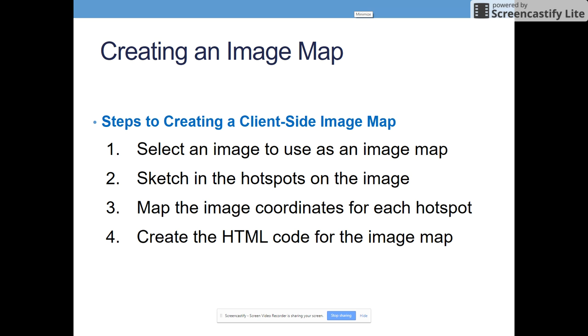So there are four main steps to creating an image map. First, you're going to select an image to use as your image map. Second, you'll sketch in the hotspots on that image map. Third, you'll map the image coordinates for each hotspot. And then notice it's not until step four until we actually create that code. So you have to go through these first three steps first before you can code. Without selecting a good image, sketching in those hotspots, and then figuring out the coordinates, you can't start to write your code.